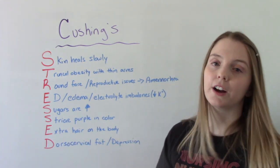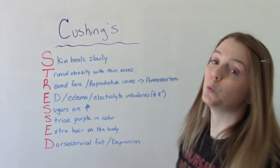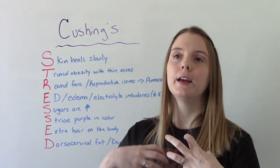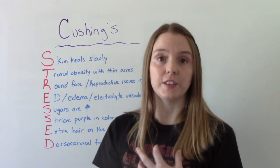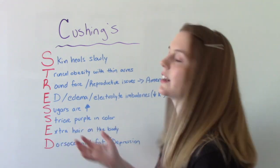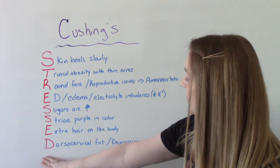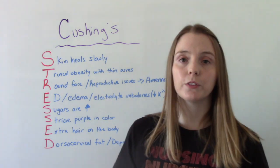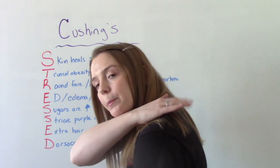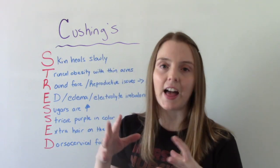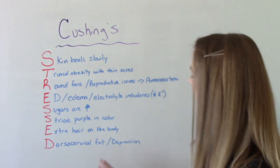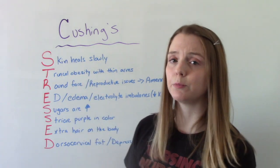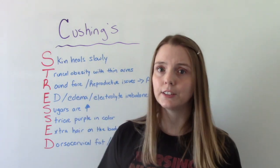E is for extra hair on the body, especially in women. A woman who has Cushing's will start to develop some more traditional male physical characteristics, like excessive body hair. D is for dorsal cervical fat — sometimes referred to as a buffalo hump on their back — an area where fat gets collected. And then the final D is depression. So we have a lot of physical signs and symptoms, but we also want to address their mental state.